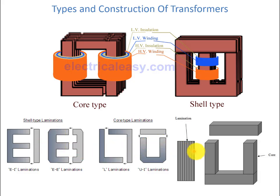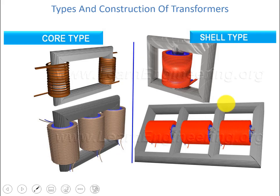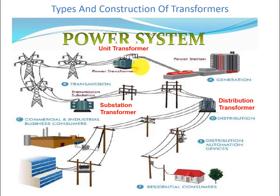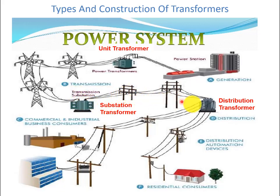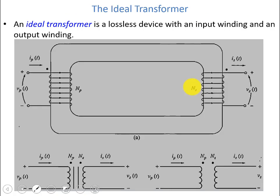In the power system, based on their position, transformers are named as the unit transformer, used to step up voltages at the power generation plant; substation transformers, which reduce or step down voltages; and distribution transformers, which further step down the voltage. Now let's look at the ideal transformer, which means we are not taking into account any losses incurred during operation.